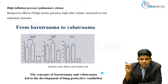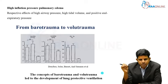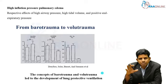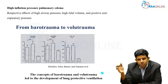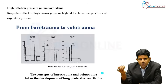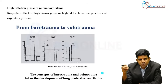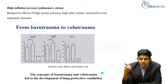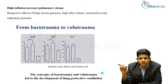Which is more important — barotrauma or volutrauma? Before a key study, most clinicians were more focused on the pressure delivered to the patient's lung. Subsequently, a study compared different combinations: high pressure with normal volume versus high volume with normal pressure. They found that patients with high volume and low pressures had more lung injury compared to high pressure with normal volume. Volutrauma — excessive tidal volume — causes more injury and produces worse outcomes compared to barotrauma.